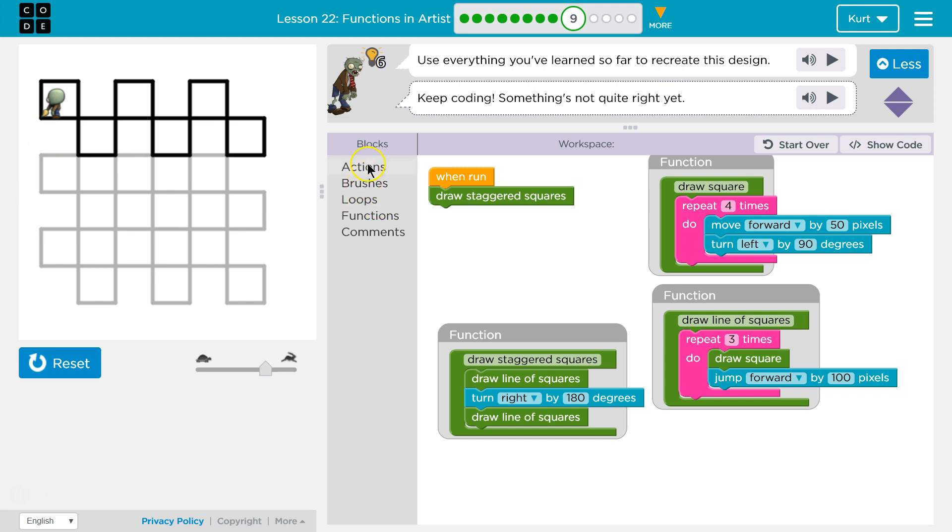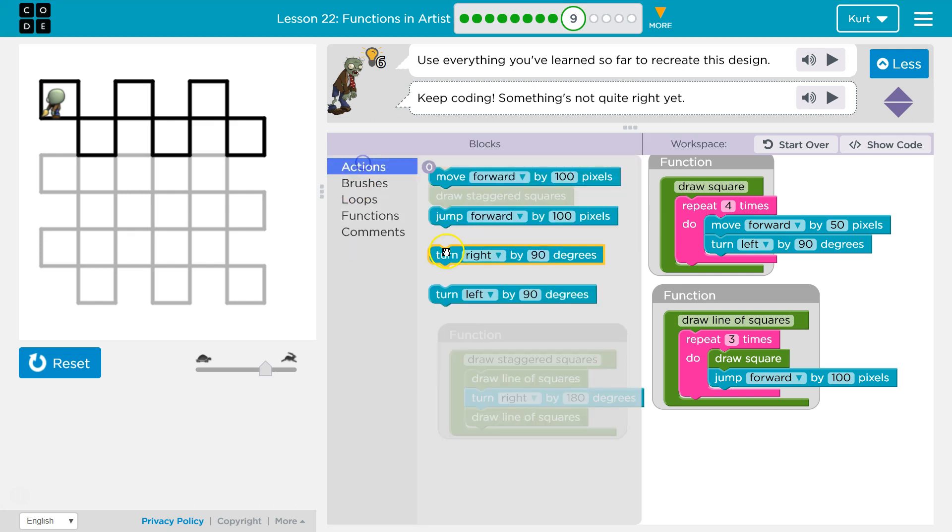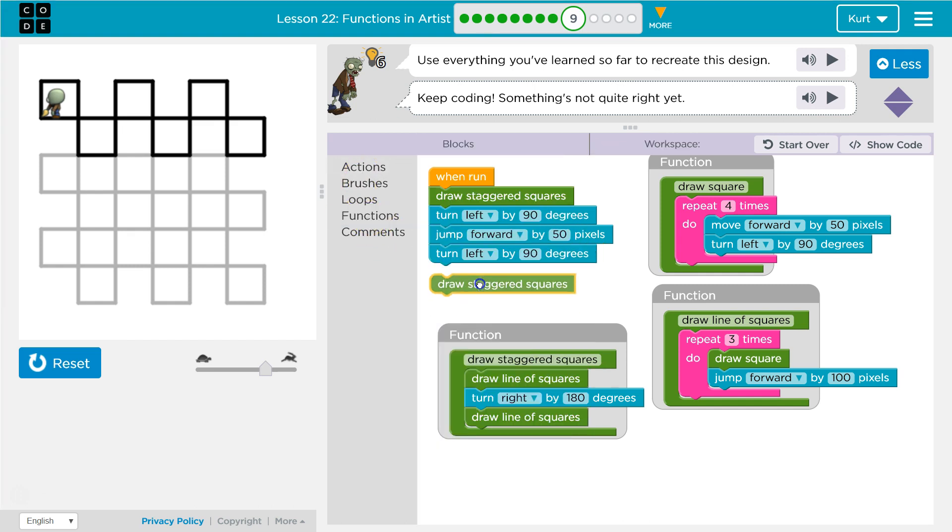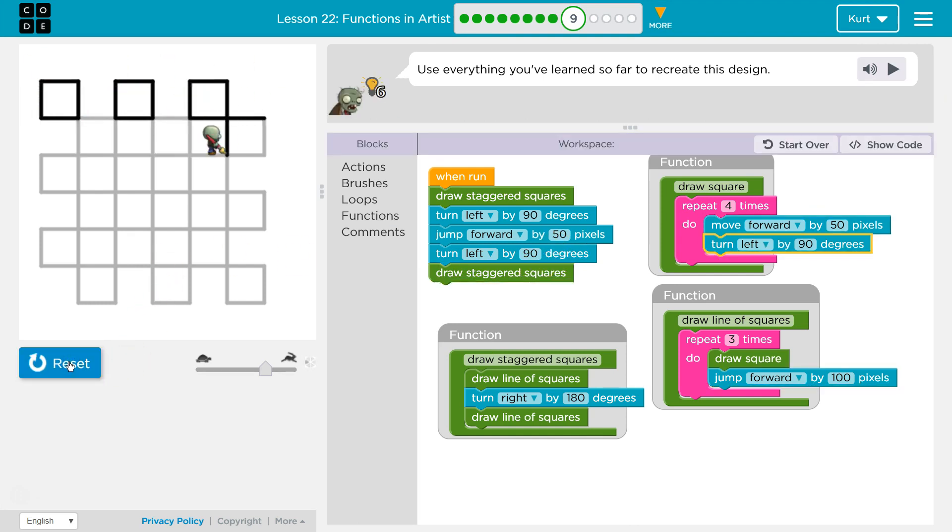What if we, actions, hmm, jump? No, I want to turn first, turn 90 degrees to the left, though, and then jump forward 50, and then I would want to turn left again, and then draw staggered squares again. I'm not sure what this will do, let's test it out. Oh, nope, definitely not.